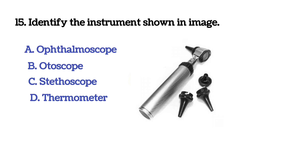Next question: identify the instrument shown in the image. Option A: ophthalmoscope. Option B: otoscope. Option C: stethoscope. Option D: thermometer. The answer is option B, otoscope.